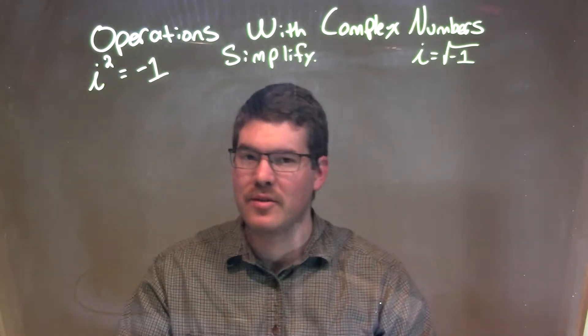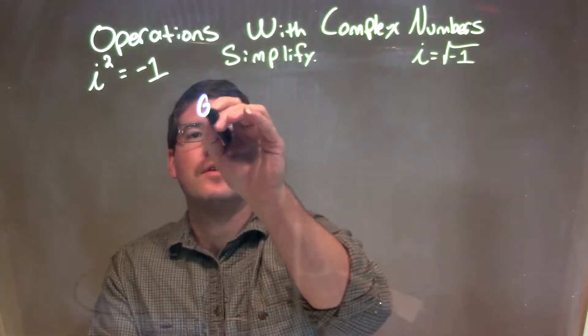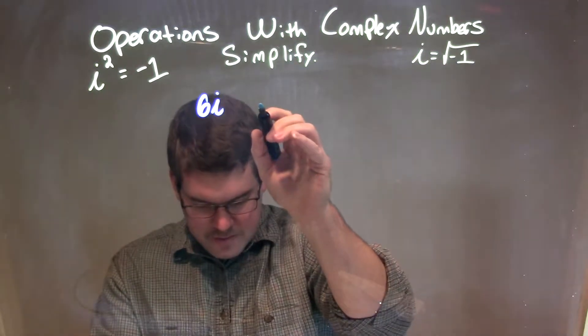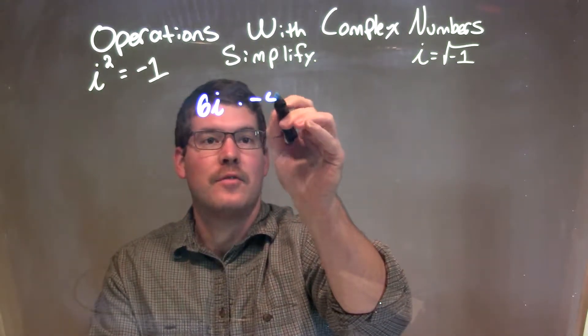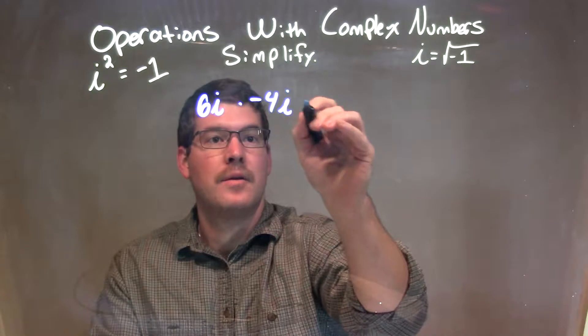So, if I was given this problem: 6i times negative 4i plus 8.